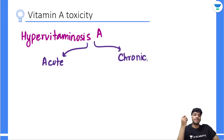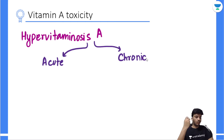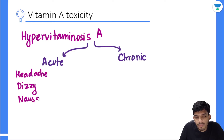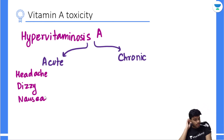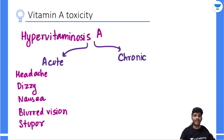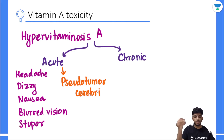Eating liver of polar bears, whales, or sharks — all very Vitamin A-rich — can cause acute hypervitaminosis A. The CNS symptoms include headache, dizziness, nausea, vomiting, blurred vision, and stupor. Because these symptoms resemble those of a brain tumor, acute hypervitaminosis A is also called pseudotumor cerebri.